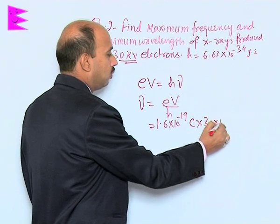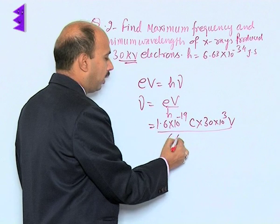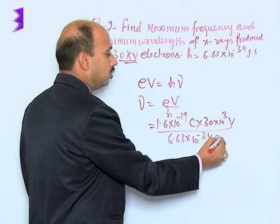So, we can write 30 into 10 raised to power 3 volt divided by 6.63 into 10 raised to power minus 34 joule second.